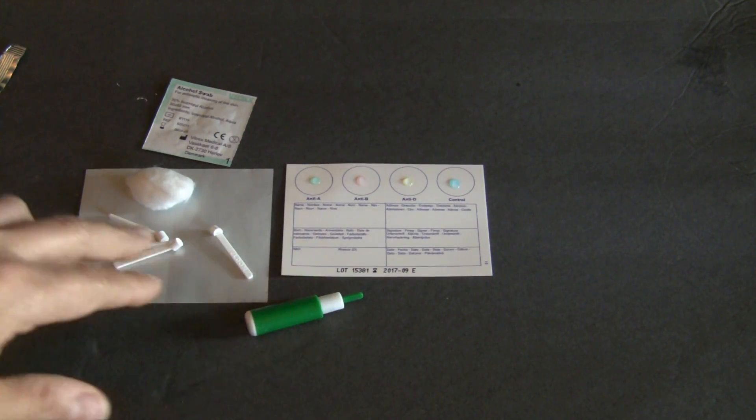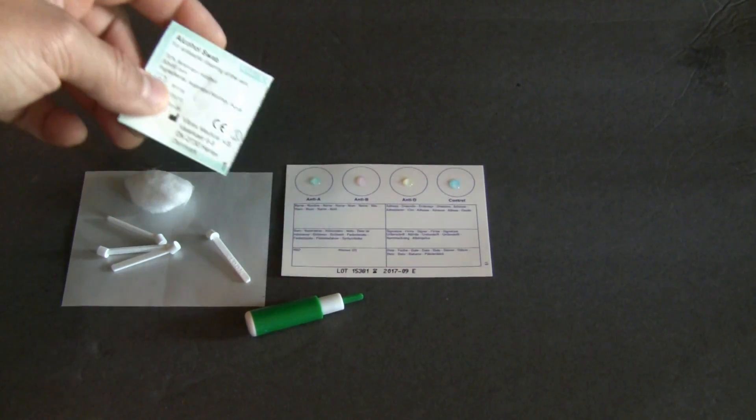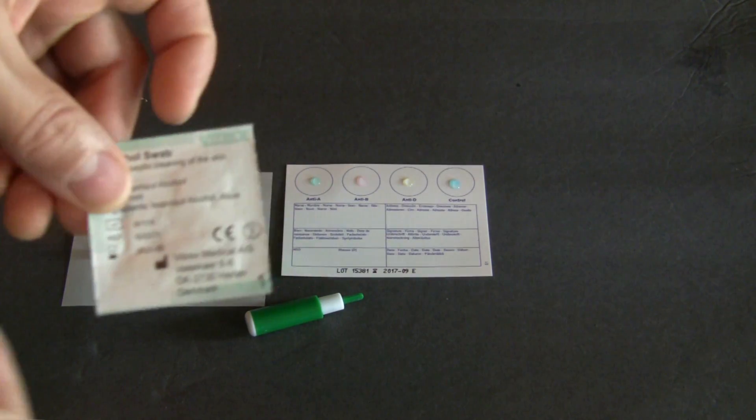Now we have the lancet, the four Eldon sticks, the cotton swab, the alcohol swab. It's about to get real in a minute.